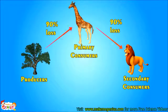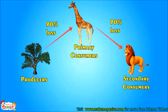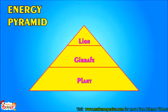Does a giraffe get all the energy from a plant that the plant gets from the sun? Or does a lion get all the energy from a giraffe that the giraffe gets from the plant? The answer is no. In fact, 90% of energy is lost when it passes from one part of the chain to another. Look at this pyramid — it is called the energy pyramid. It shows that energy available becomes lesser and lesser as we move up the food chain.